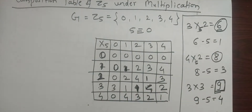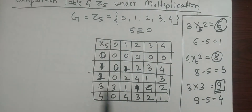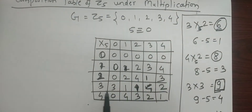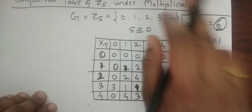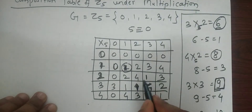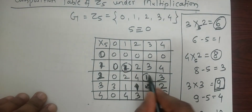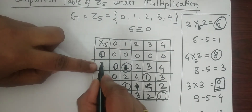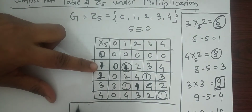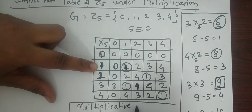From this table we can find the inverse of each and every element. Since we know the multiplicative identity is 1, we look for where 1 appears in the table. There are four 1s in the table, so we can find the multiplicative inverse of each element.